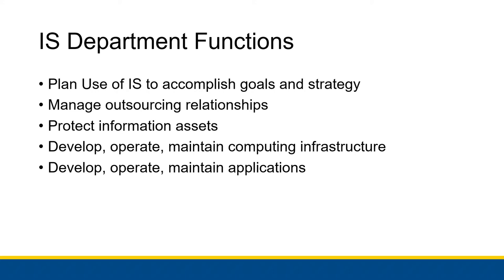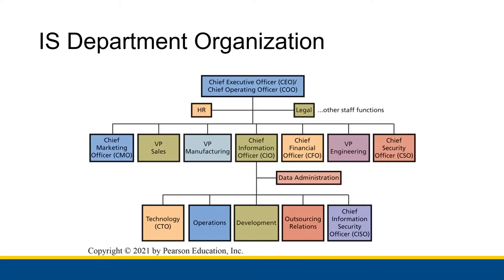Our focus is planning information systems to accomplish organizational goals and strategy and to manage outsourcing relationships. What I have here is a diagram that represents a pretty typical organizational structure for a business. Typically what you have in an organization is the chief executive officer at the very top, in charge of leading all the other company executives. Underneath them is typically HR and legal departments, as well as other executive officers like the chief marketing officer, VP of sales, VP of manufacturing, the chief information officer, chief financial officer, VP of engineering, and chief security officer.